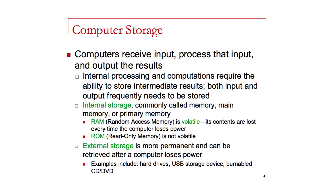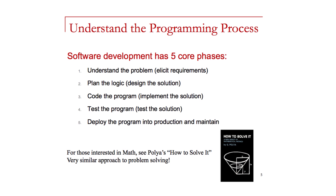Because RAM is volatile, we need a way to store information so we can access it later when the computer is turned back on. External storage such as a hard drive, USB stick, or CDs and DVDs serve that purpose. There are five phases to software development in general. The first is understanding what the user wants — looking at the requirements — and then from those requirements, developing a plan.